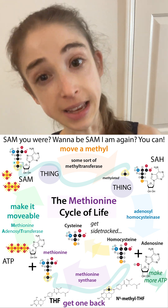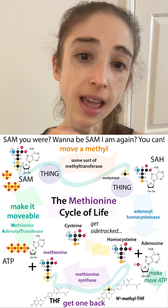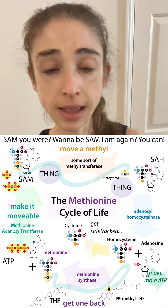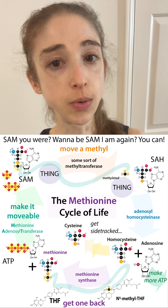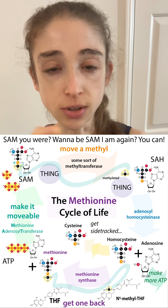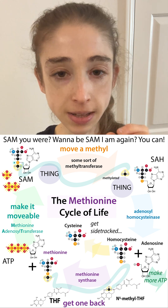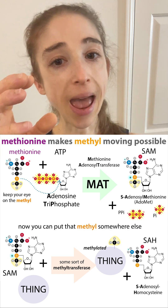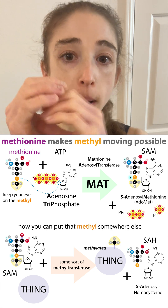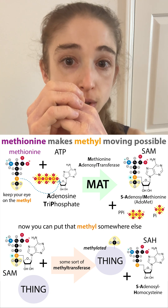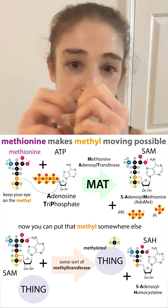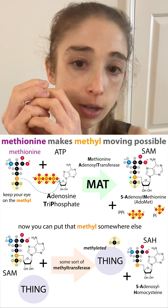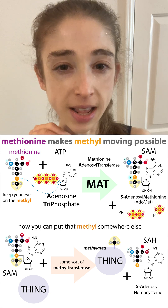SAM I was, and now SAM I am — but don't be sad. We can take that homocysteine and actually convert it back into methionine by adding a methyl group back from a folate molecule, which allows us to have methionine again. So we get this circle of life where we're taking that methyl group off and putting that methyl group on — but instead of doing it directly, we're first activating the methyl group for transfer by making the sulfur more vulnerable to attack by a nucleophile that then takes that methyl group.